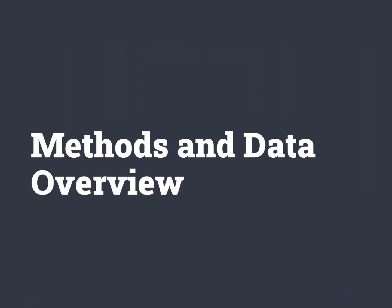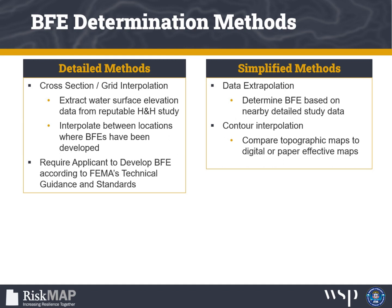Next, we will discuss the methods and necessary data to determine a BFE in a Zone A floodplain. BFEs are not published on the FIRM map in Zone A's, so we have to determine the BFE using a method. There are two types of methods: detailed methods and simplified methods. Detailed methods are required when developments are larger than 5 acres or 50 lots. Otherwise, simplified methods can be used unless otherwise specified by local ordinance.